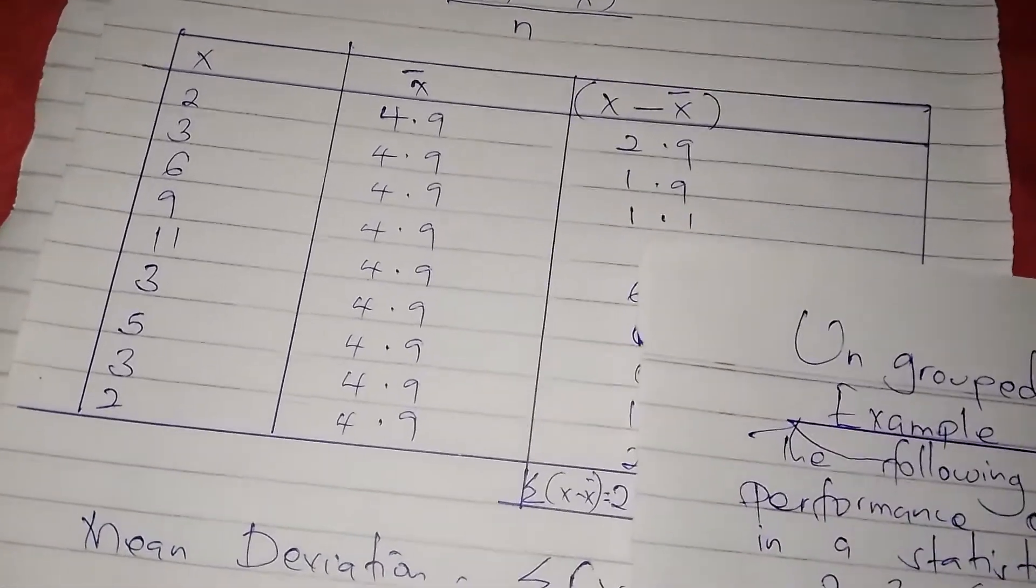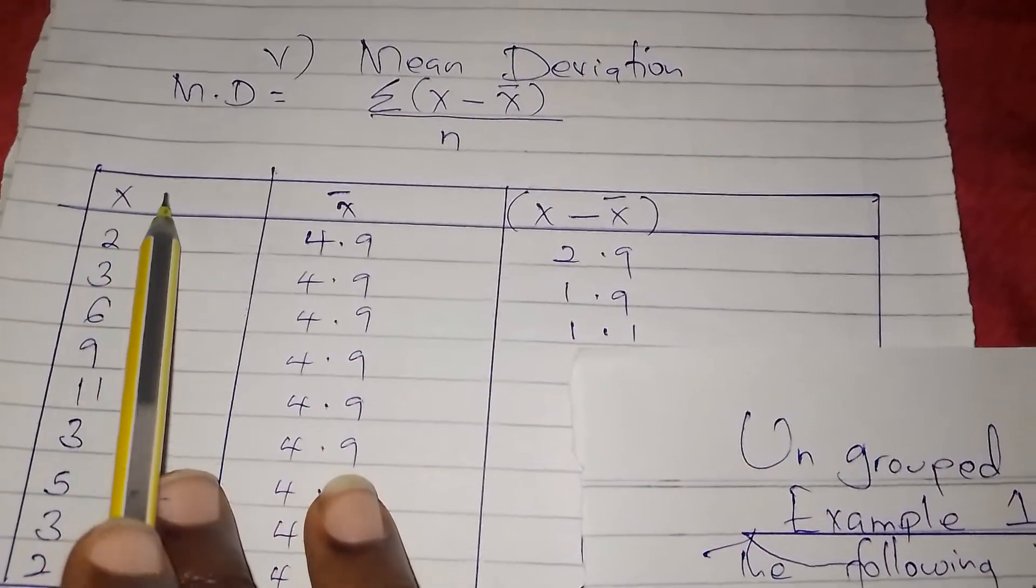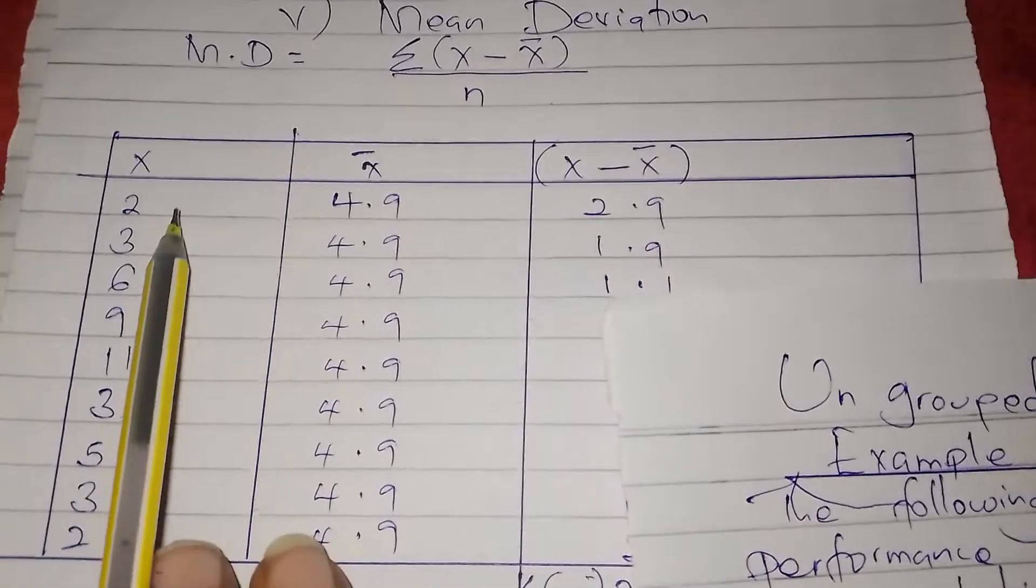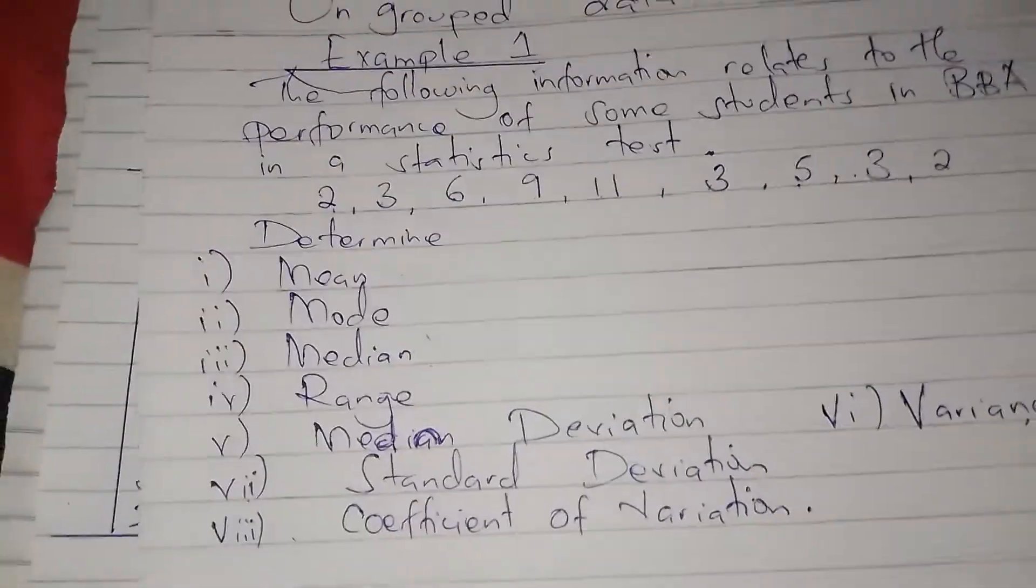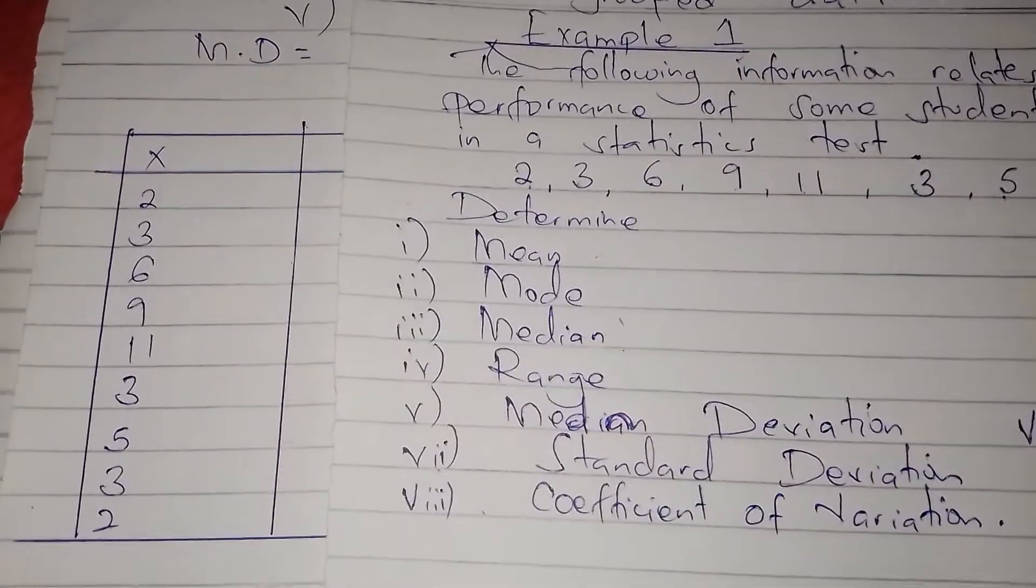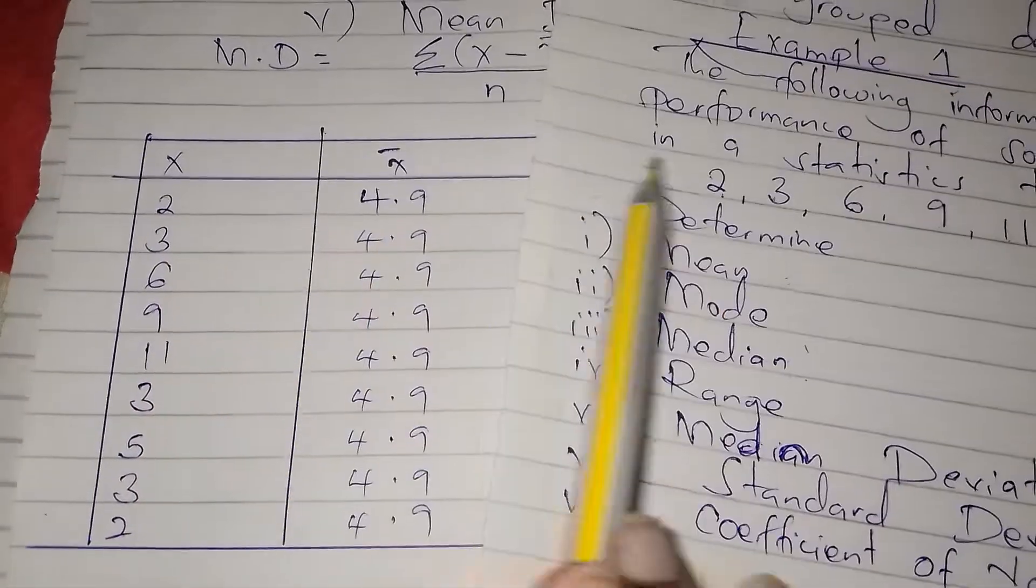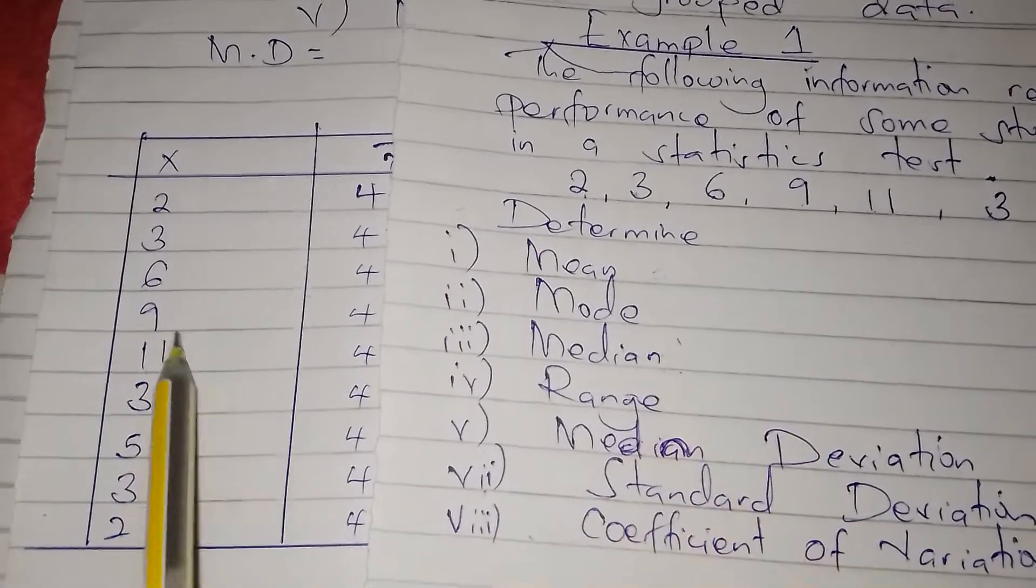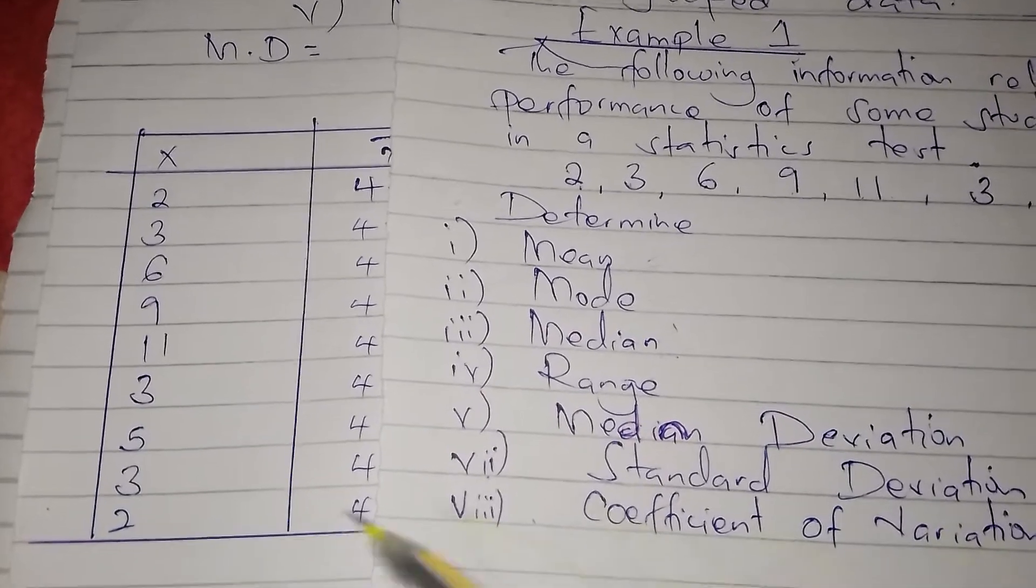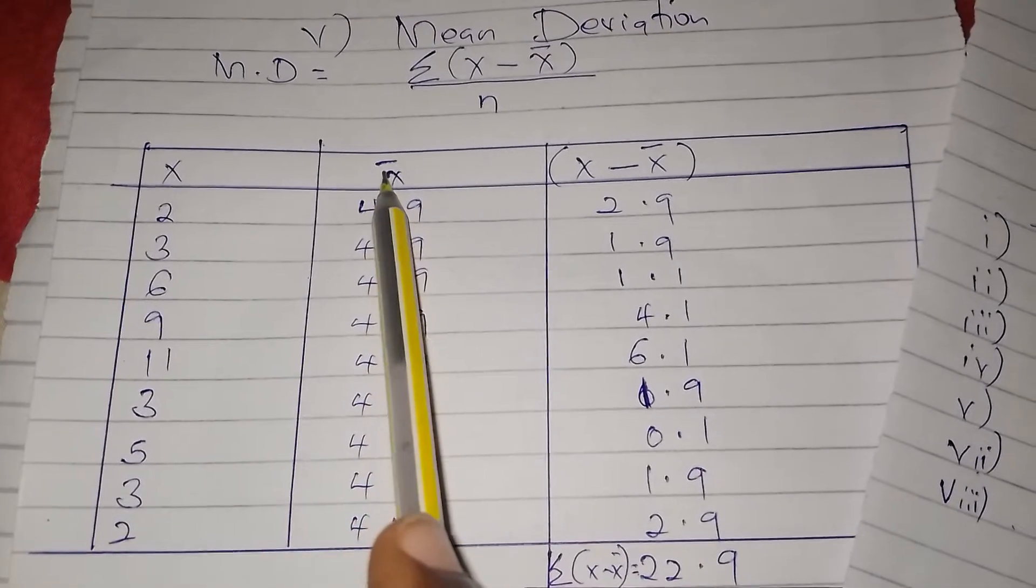According to the formula, we need the column of X, then X bar, and then X minus X bar. So the values of X are the marks of students that were given in the question. So you copy them directly into the table: 2, 2, 3, 3, 6, 6, 9, 9, 11, 11, like that until they're done.